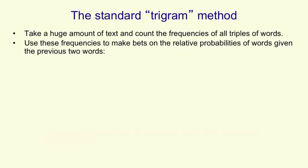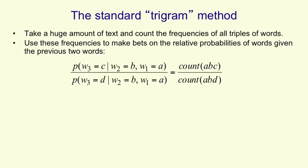You take a huge amount of text and you count the frequencies of all triples of words. Then you use these frequencies to make bets on the relative probabilities of the next word given the previous two words. So if we've heard the words A and B, we can look at the counts that we have in our huge body of text for the sequence ABC and the sequence ABD. We can say that the relative probability that the third word will be C versus the third word will be D is given by the ratio of the two counts ABC and ABD.